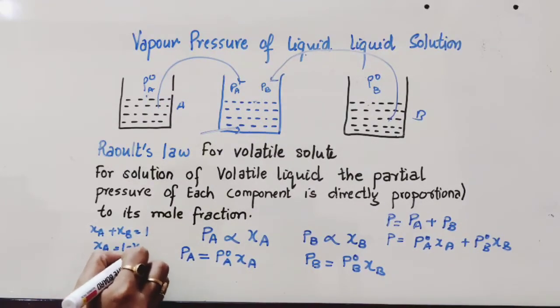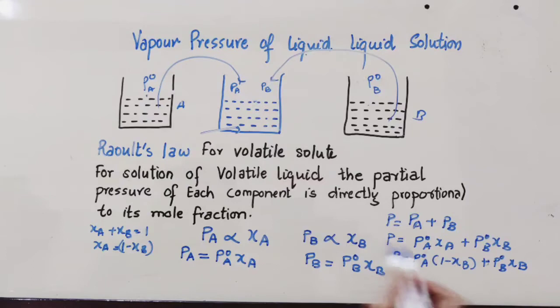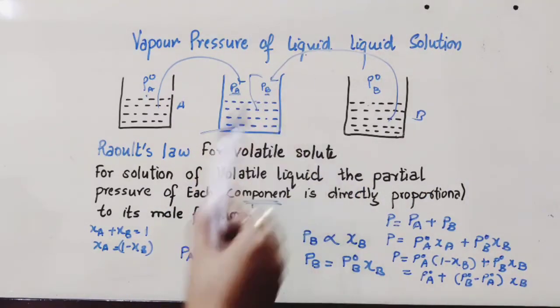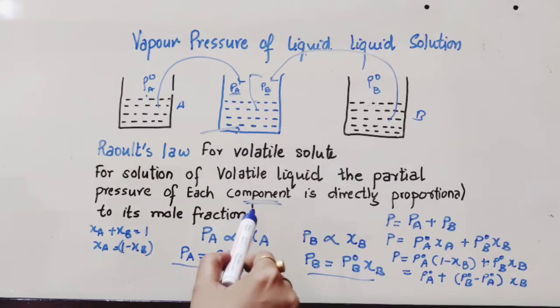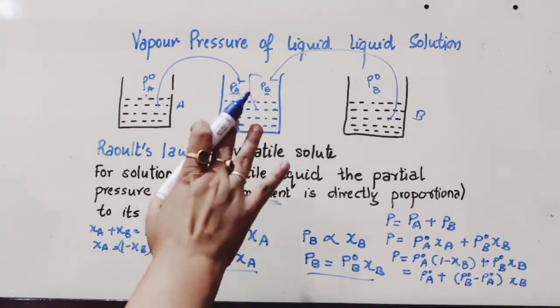We can put any one term in form of another. In place of XA, I have put 1 minus XB. Opening this: P⁰A minus P⁰A·XB plus P⁰B·XB. Taking XB in one common bracket, we get P⁰A plus (P⁰B minus P⁰A)·XB. This is the whole relation of Raoult's Law for volatile solute, that is for solution of volatile liquids. For a solution of volatile liquids, the partial pressure of each component A and B is directly proportional to its mole fraction, and this proportionality constant is P⁰A and P⁰B, which are constants at a given temperature.